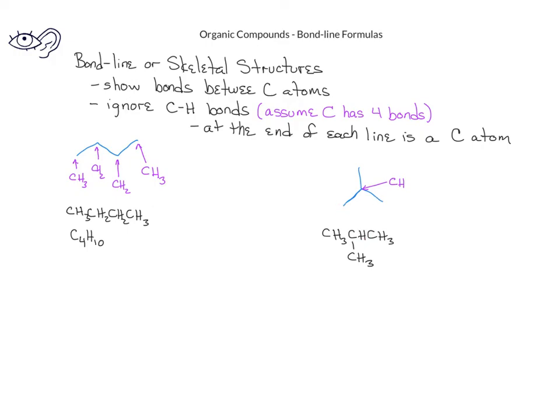Each of the other three carbons on the ends of the lines is only connected to the central carbon, so there must be three hydrogens on each of these outer carbons. Each of these outer carbons would therefore represent a CH3 unit, as we see with the condensed structural formula.